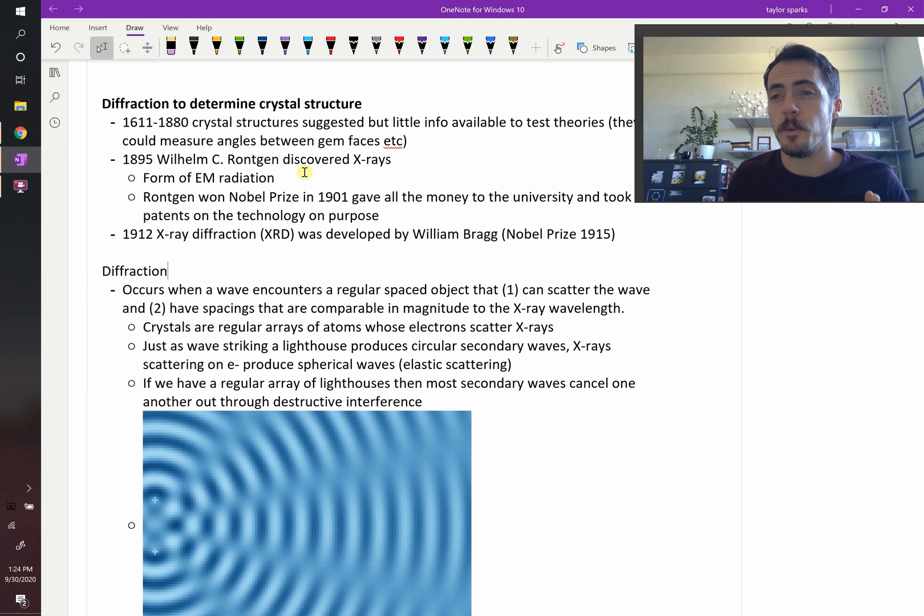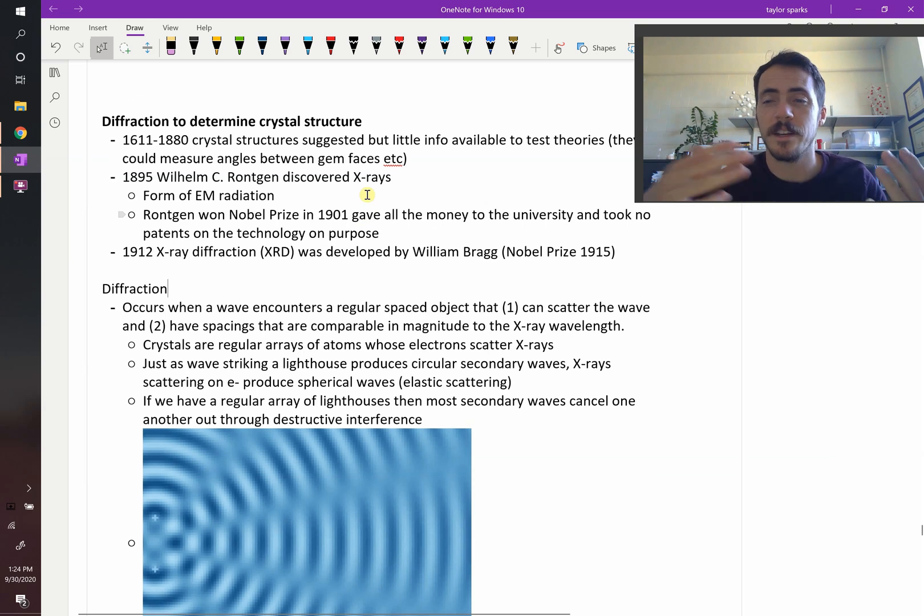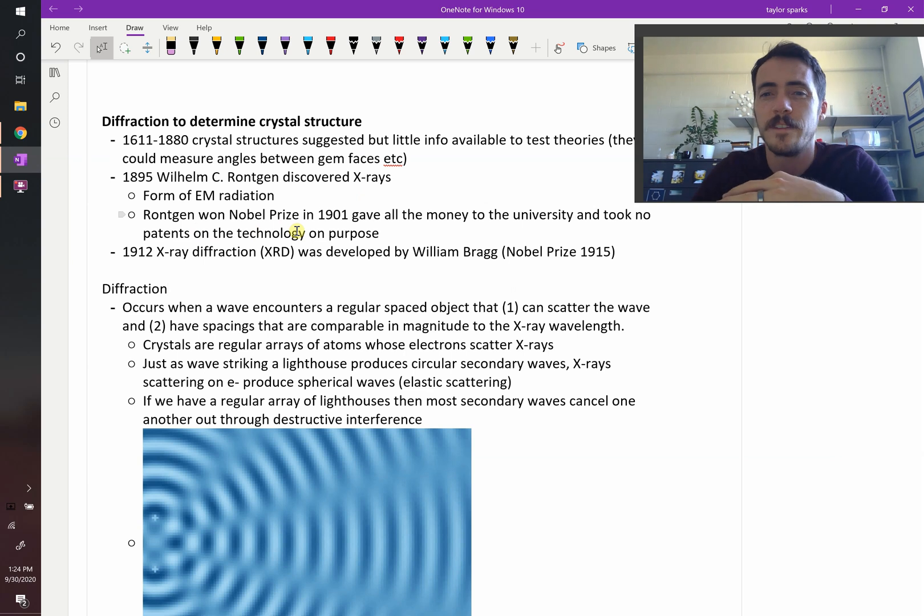That all changes at the dawn of the 20th century. 1895, Wilhelm C. Röntgen discovers x-rays. It's a form of electromagnetic radiation. It just has really short wavelengths, therefore it's high energy. And it's short enough in wavelength that it starts to interact differently with matter than visible light, for example, or other wavelengths. What I think is amazing about this, he gets the Nobel Prize for it in 1901. But first off, he gives all the money to the university, which is rad, because he believed in expanding science. But he also took out no patents on this technology on purpose because he realized that he had just discovered something that was going to change science. And if he patented it, then it was going to prevent other people from using this in advancing science. We don't see that sort of thing happening today. That's pretty rad.